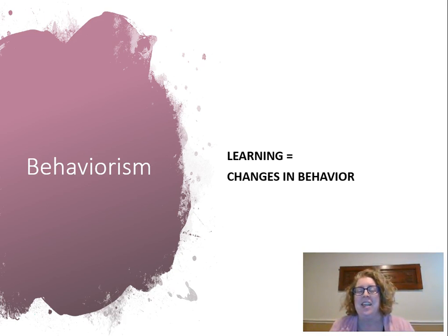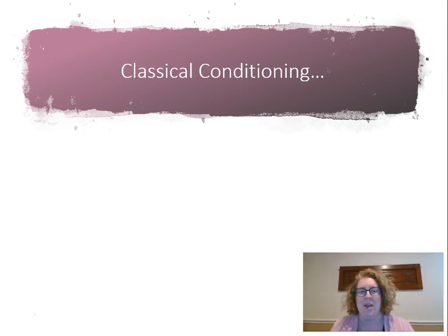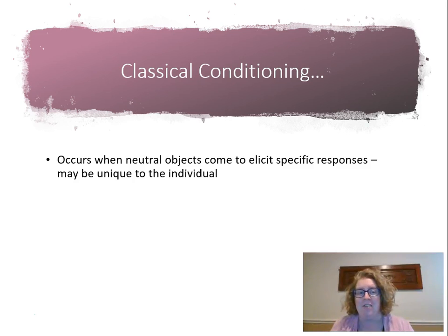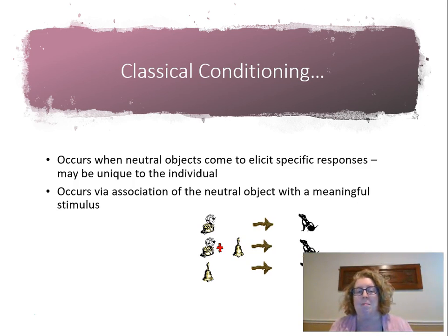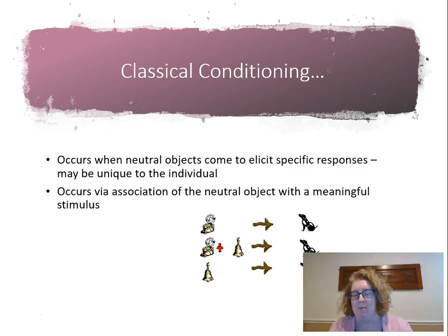So first off, behaviorism. Remember that behaviorism is learning equals a change in behavior. When you think about classical conditioning, you should be thinking about Pavlov. It occurs when a neutral object comes to elicit specific responses that may be unique to an individual — an association of a neutral object with a meaningful stimulus. So we have that bell and food: a dog salivates when he has food, then we ring the bell when the food is presented, and then the dog salivates just by the ringing of the bell.